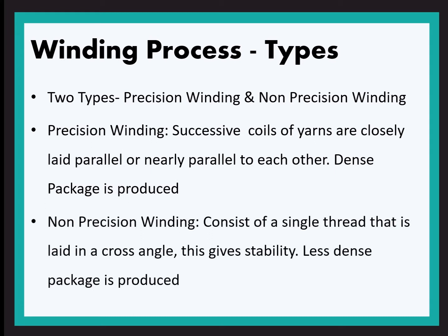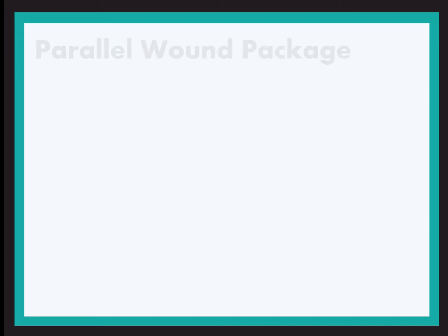Next is non-precision winding. Here a single thread is laid in a helix angle and it crosses over each other to give stability. A less dense package is produced and tension of yarn is comparatively less, and the package produced is soft. Here the package is not directly driven by the spindle — the drive is passed to the drum and then the drum drives the package, so we can call it drum driven.